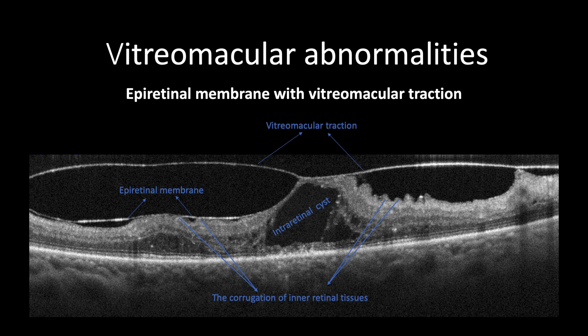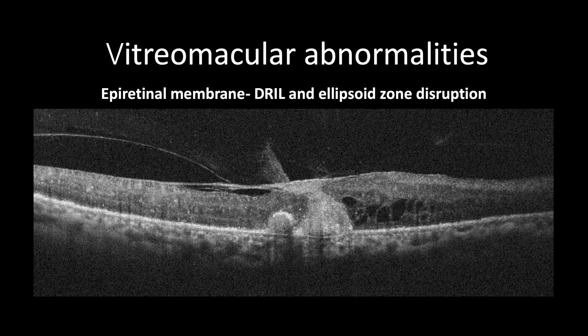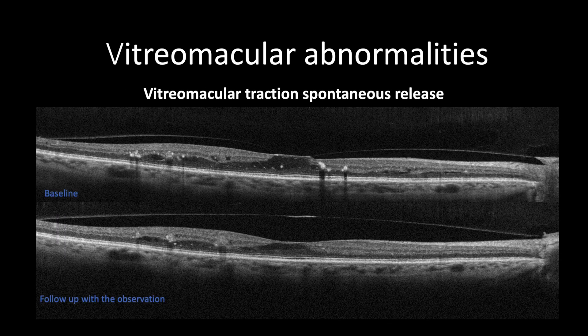Cases presenting with epiretinal membrane and vitreomacular tractions have more chance of spontaneously releasing the epiretinal membrane than cases of epiretinal membrane without vitreomacular tractions. Epiretinal membrane and vitreomacular tractions can be associated with disruption of the ellipsoid zone or disorganization of inner retinal layers, which are poor visual prognostic factors post-surgery in severe cases.